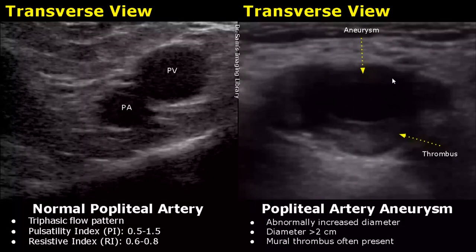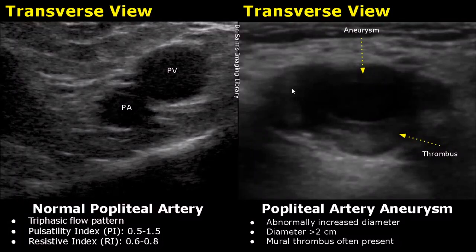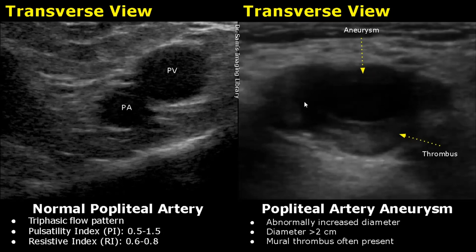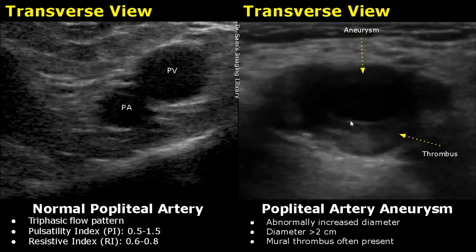Popliteal artery aneurysm refers to the abnormally increased diameter of the popliteal artery. Here is the normal transverse view of the popliteal artery along with the popliteal vein, whereas in this image we can see a very large diameter. The diameter is usually more than 2 centimeters in an aneurysm. A mural thrombus is often present — this small echogenic area is the thrombus, attached to the wall of the vessel, so it is called a mural thrombus.